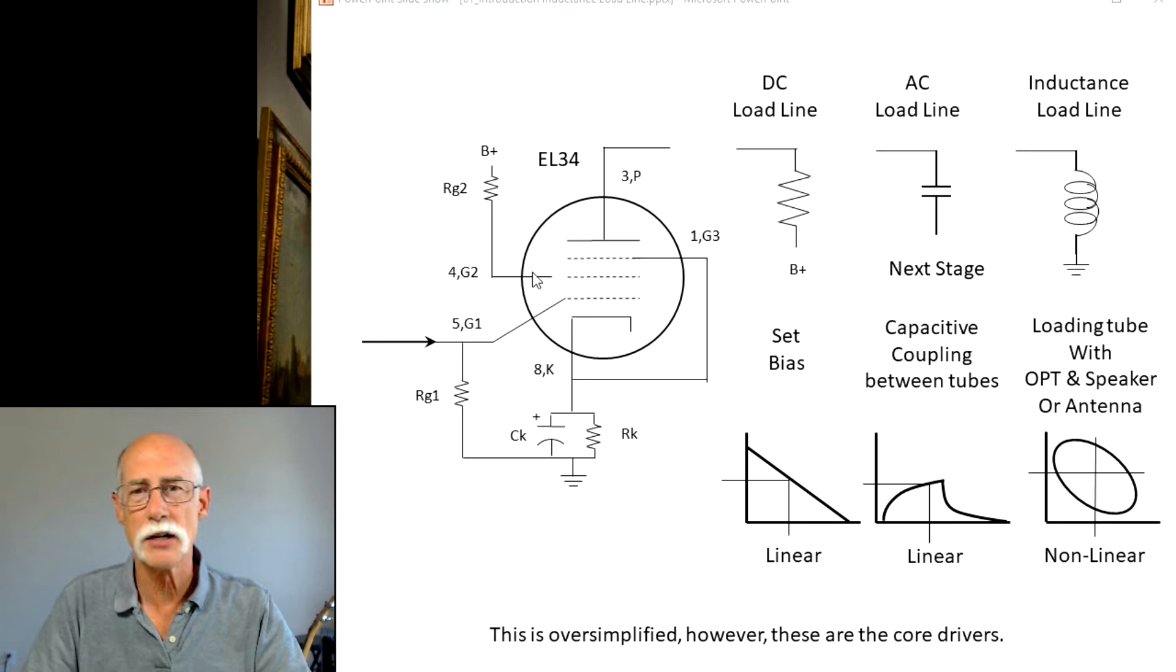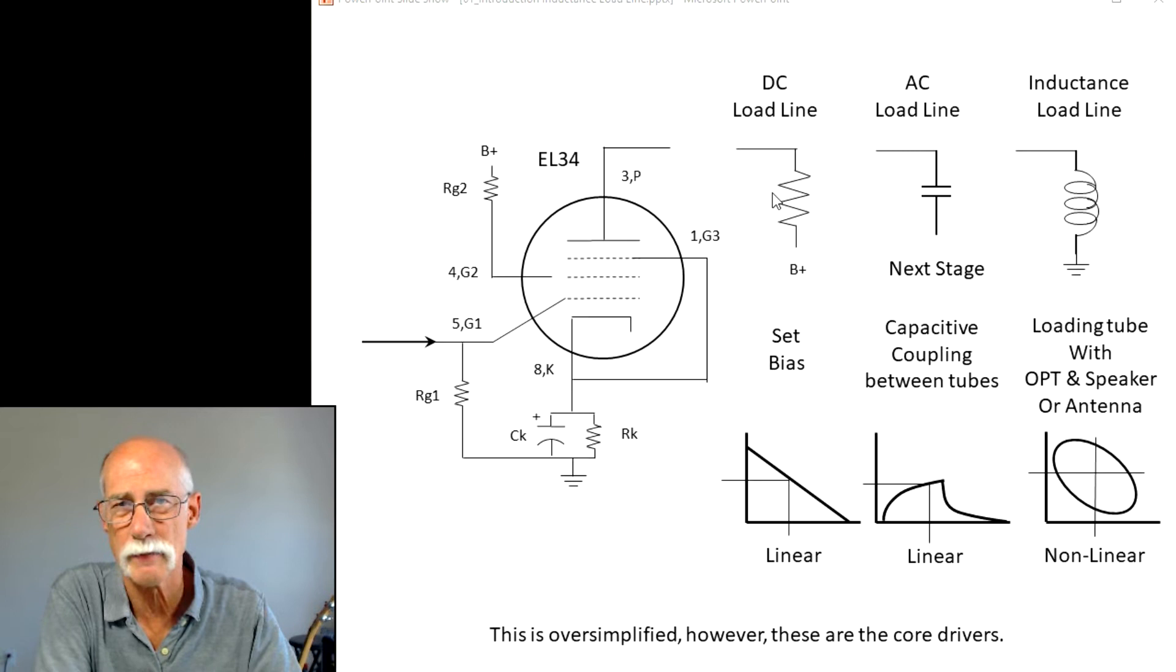In a tube, I'm showing an EL34 here. This could be a triode, this could be a transistor. It doesn't matter. What is important here is what's connected to the output, to the plate. In a DC load line, we consider the plate resistor. It helps us set the bias. And it's a linear line, not because it's straight. It's linear because for any given value of plate current, there's one and only one value for the plate voltage. It's linear. This is easy peasy. It's just sixth grade add, subtract, multiply, divide type math.